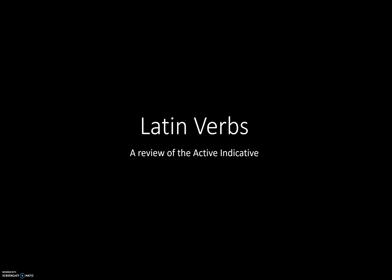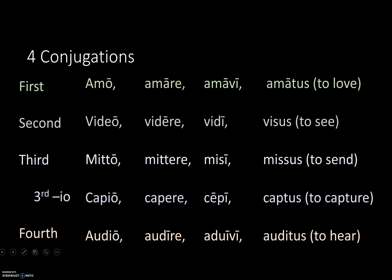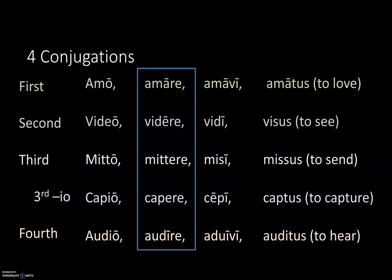There are four conjugations of verbs in Latin: the first, second, third, a subset of the third known as third-IOs, and fourth. You can identify the conjugation of a verb by its second principal part. These go in alphabetical order: first conjugations have a long A before the RE, second conjugations have a long E, third and third-IOs have a short E, and fourths have an I.